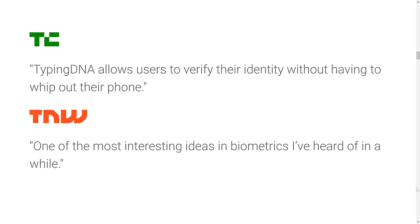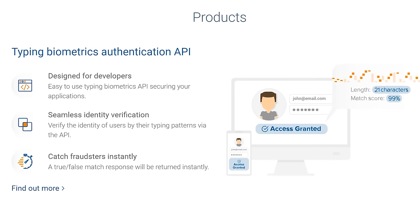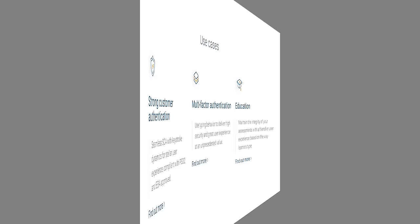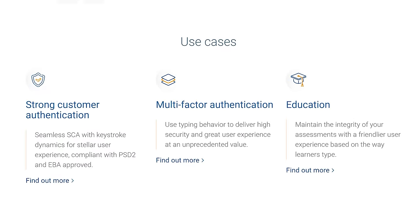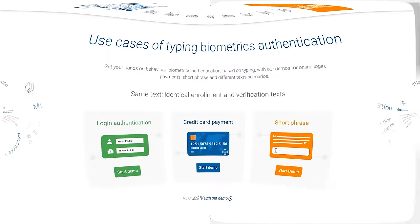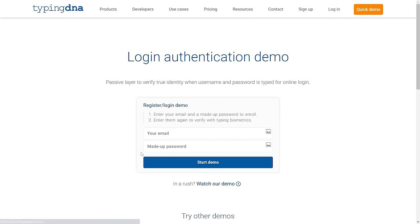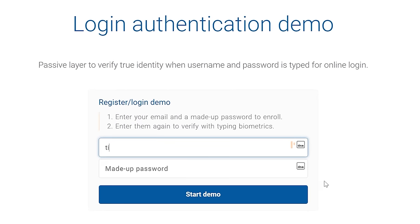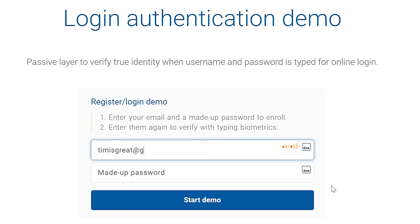This allows users to authenticate their accounts without having to whip out their phone or mobile devices. TypingDNA is built for developers, provides seamless identity verification, and can help catch fraudsters instantly. It works great as two-factor or multi-factor authentication. To illustrate this better, let's try TypingDNA's demo — I'm first asked to create a dummy account by typing my email and a made-up password.